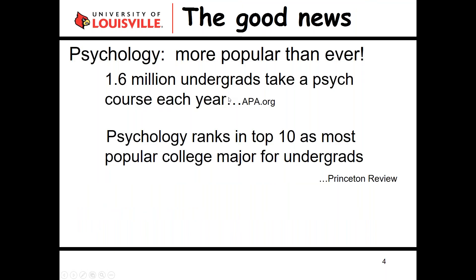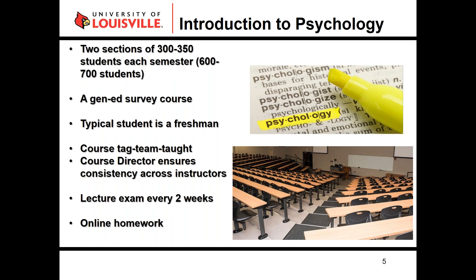Now some good news: according to the American Psychological Association, psychology is more popular than ever. 1.6 million undergrads take a psychology course each year, and according to the latest Princeton Review, psychology ranks in the top 10 as the most popular college major for undergraduates. Our introductory psychology course at the University of Louisville is very consistent with national data — it is a very popular course. We teach two sections of 300 to 350 students each semester.